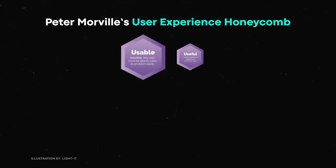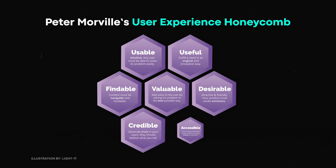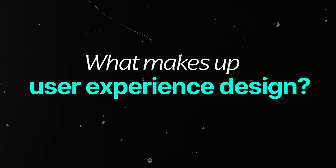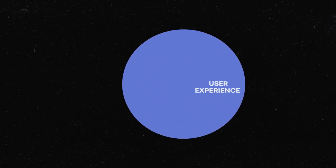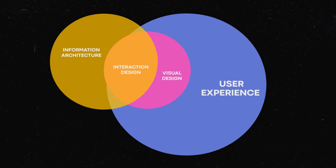The honeycomb of user experience design really breaks it down into: usable, useful, findable, valuable, desirable, credible, and accessible. As a PM, since you are that overarching role that crosses all these different functions, this really helps us advocate for the user or the product to accomplish these different objectives. User experience design is made up of three things: information architecture, interaction design, and visual design — visual design being our graphic design elements.